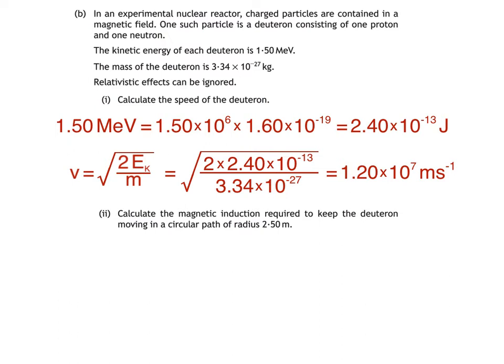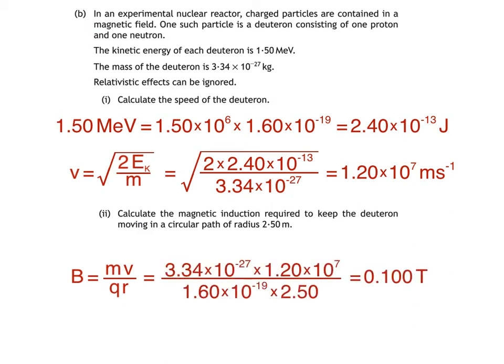Part 2 asks us to calculate the magnetic induction required to keep the deuteron moving in a circular path of radius 2.50 meters. Here we use the equation from part A of the question, but rearrange to make magnetic induction B the subject. Multiply both sides by BQ, then divide both sides by QR, giving us B equals MV divided by QR. Substitute the values into this equation, and we get an answer of 0.100 Tesla, to three significant figures.